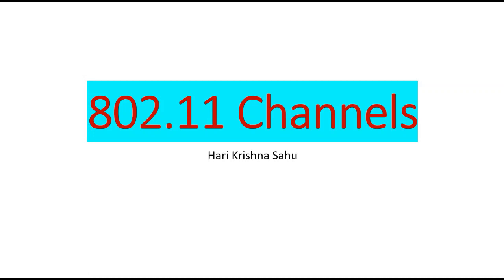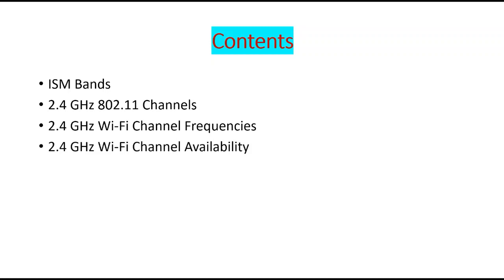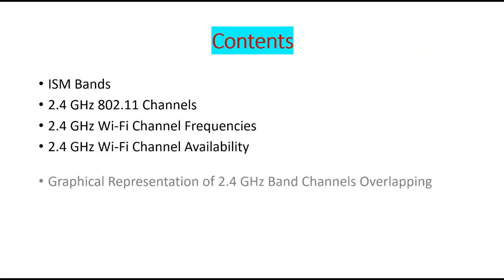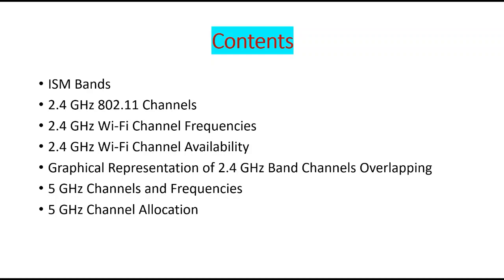Hello guys, after a long gap, today's topic of discussion is 802.11 channels. The contents are: first we will look into different ISM bands, 2.4 GHz 802.11 channels, different 2.4 GHz Wi-Fi channel frequencies, 2.4 GHz Wi-Fi channel availability, graphical representation of 2.4 GHz band channels, 5 GHz channels and frequencies, and 5 GHz channel allocation.